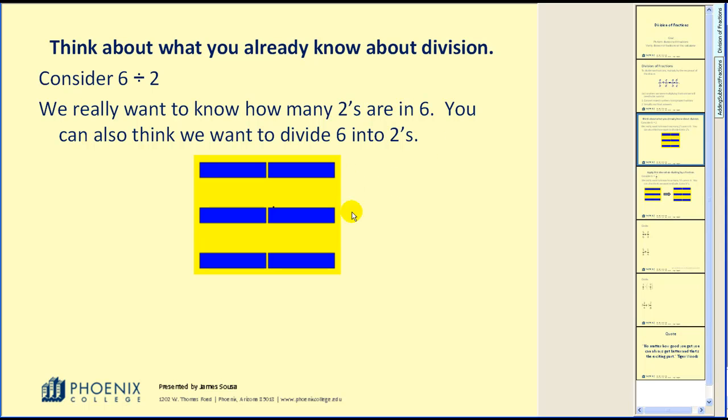So for example, if this is our model for six, each rectangle equaling one unit, we could easily divide this into groups of two. There's one, there's one, and there's another. And we can see the result would be three groups. Therefore we can conclude and pretty much understand why 6 ÷ 2 = 3.